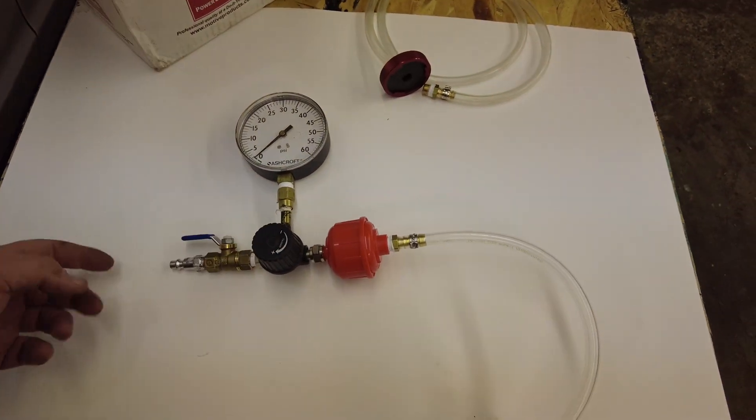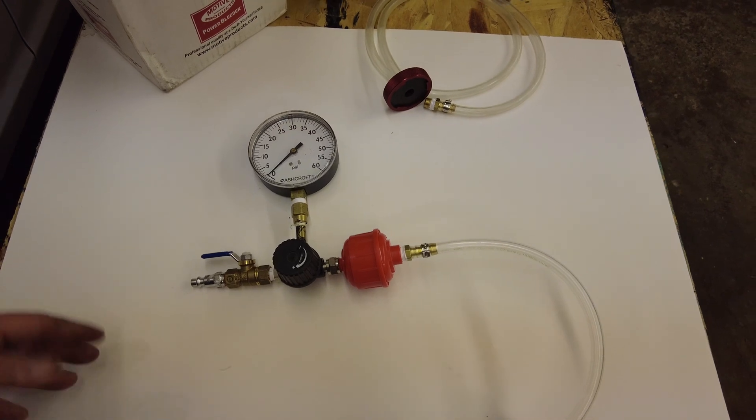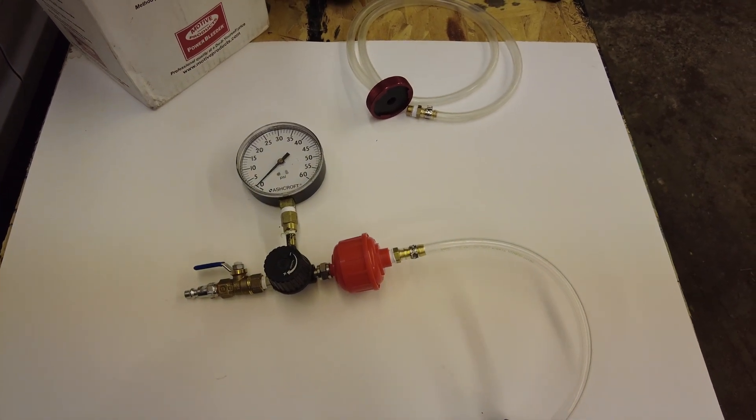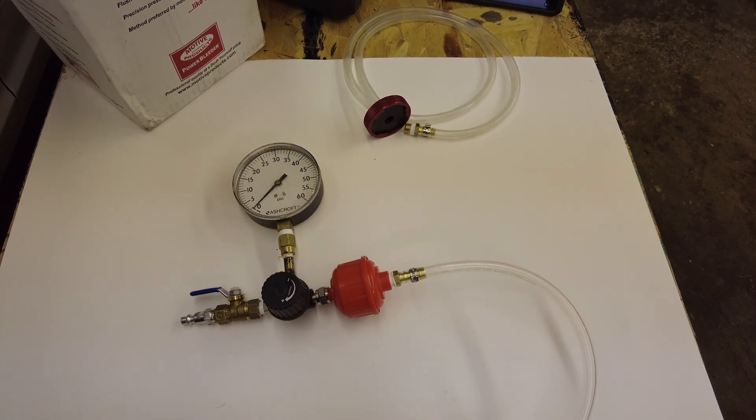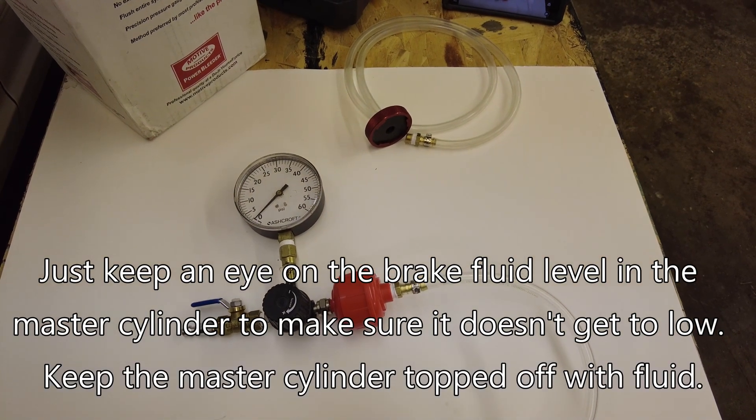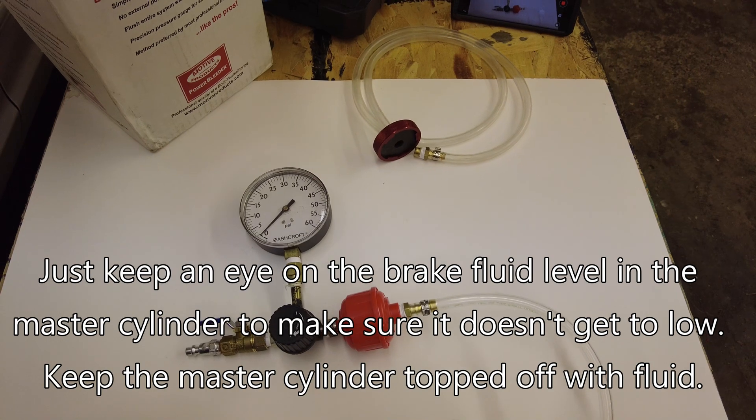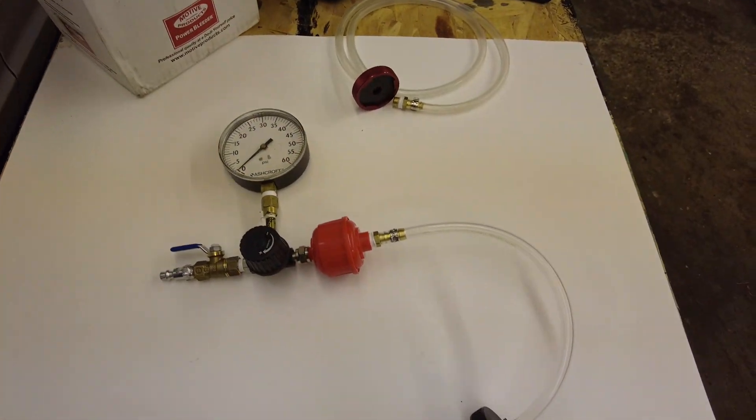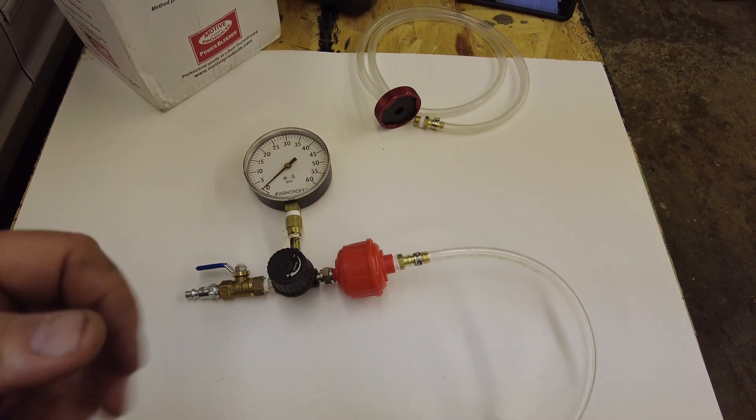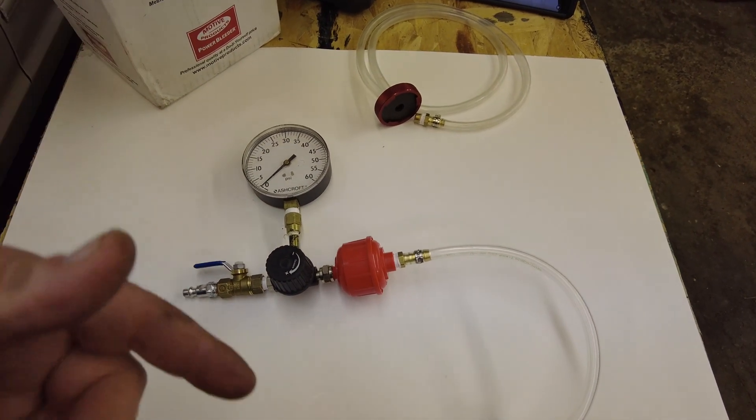Once you get this all hooked up, you put your hose on there and then you can go around and bleed all the brakes and you don't have to worry about ever sucking anything in. Whether you got someone helping you push down, open the bleeder, close the bleeder, release - or if you're trying to do a manual bleed procedure with the scan tool that says to open the bleed valve and then go back in the vehicle and pump the brakes.